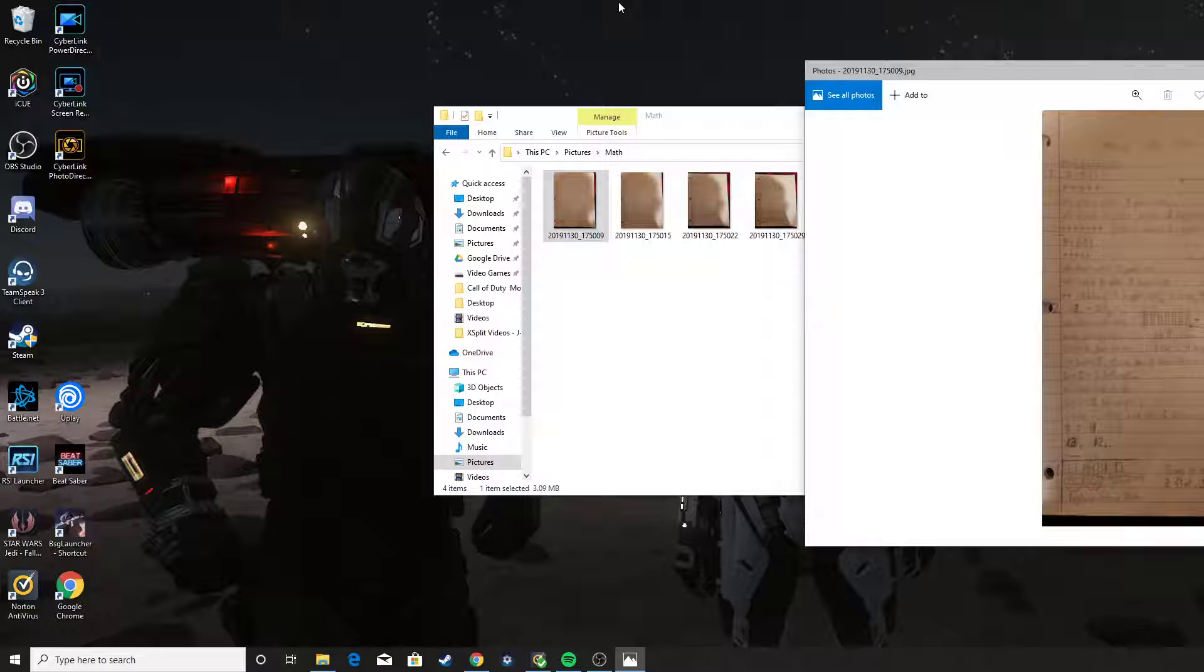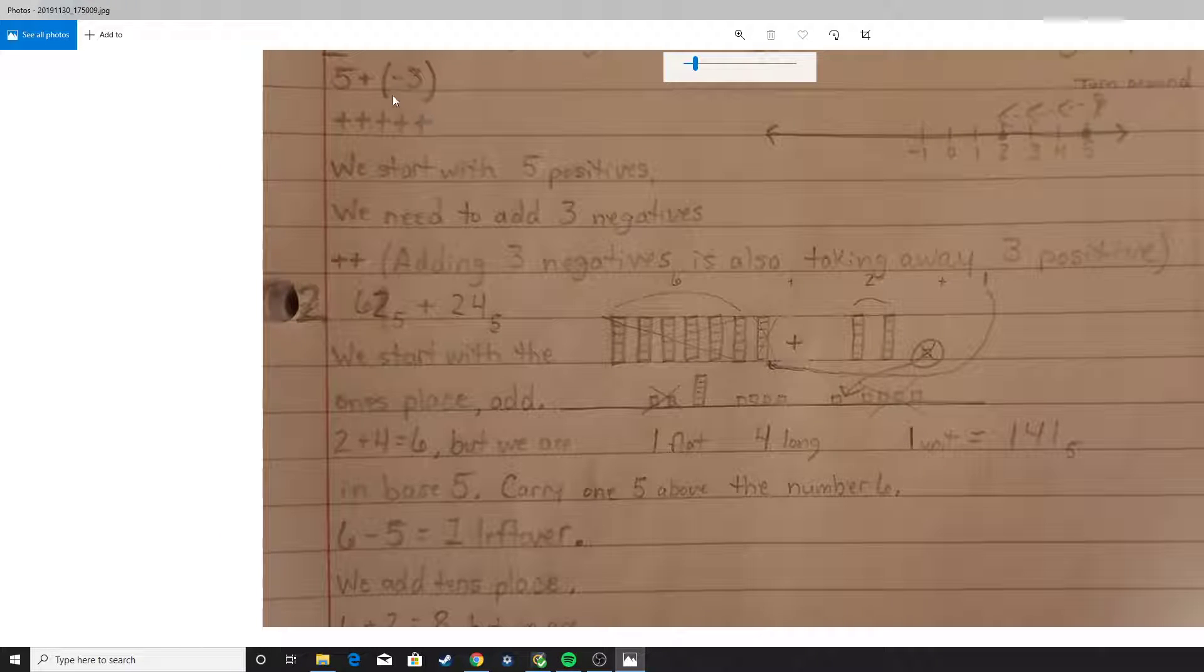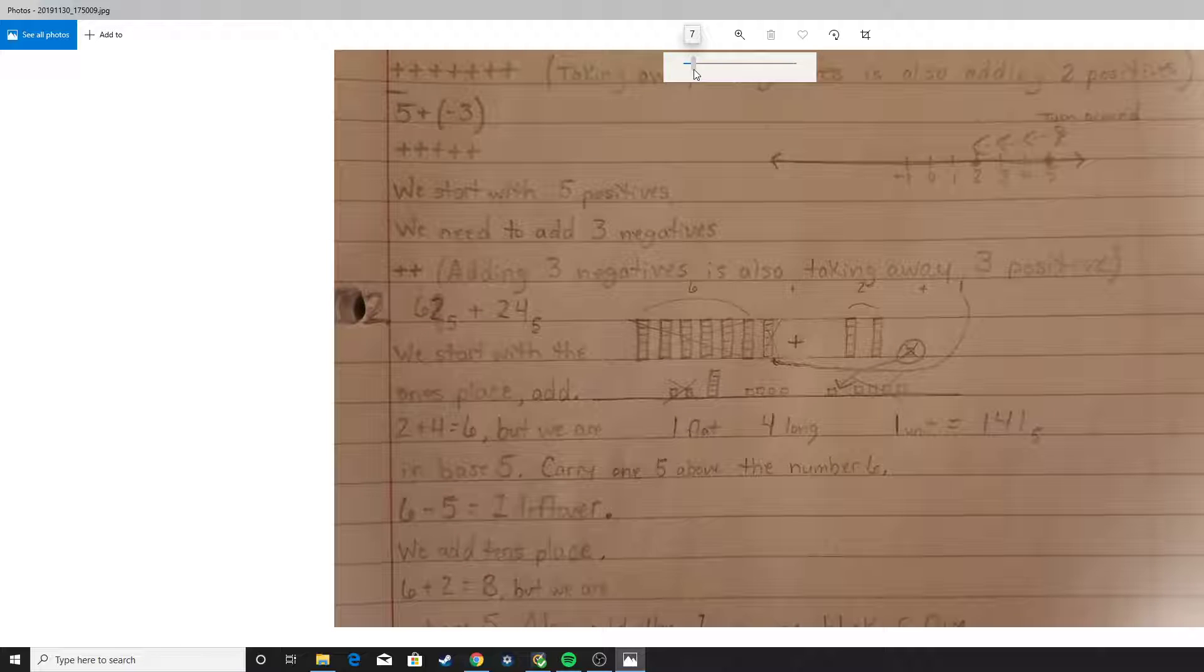My first question is for manipulatives. The question right here, I don't know if it's hard to read or not, but let me blow this up just a little bit. Our first question right here is 5 plus negative 3. The question reads that we're supposed to use chips, ions, or counters, and the number line to model 5 minus negative 2 and 5 plus negative 3. What I showed here, we can actually work on this first one, is we're going to work on 5 plus negative 3.